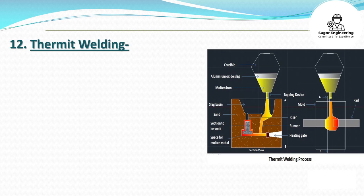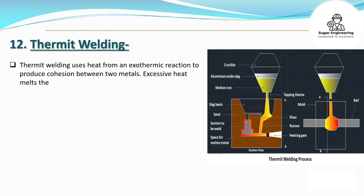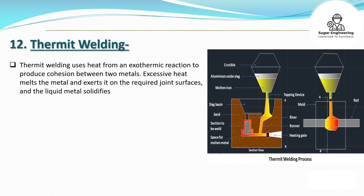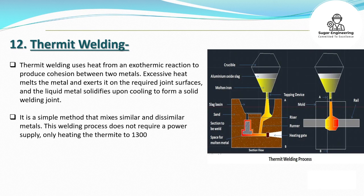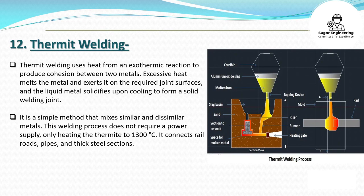12. Thermite Welding. Thermite welding uses heat from an exothermic reaction to produce cohesion between two metals. Excessive heat melts the metal and exerts it on the required joint surfaces, and the liquid metal solidifies upon cooling to form a solid welding joint. It is a simple method that joins similar and dissimilar metals. This welding process does not require a power supply — only heating the thermite to 1,300 degrees Celsius. It is used to connect railroads, pipes, and thick steel sections.